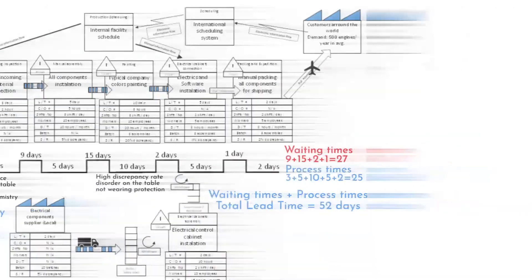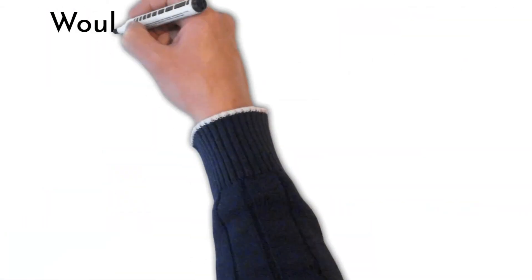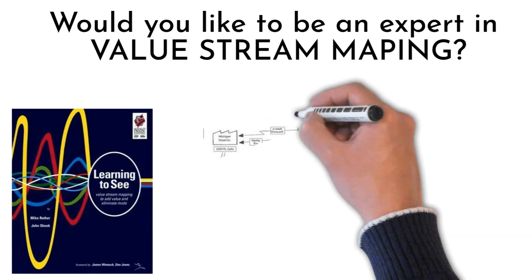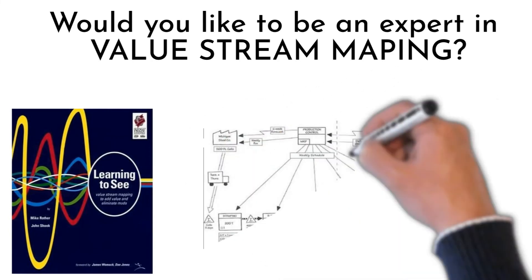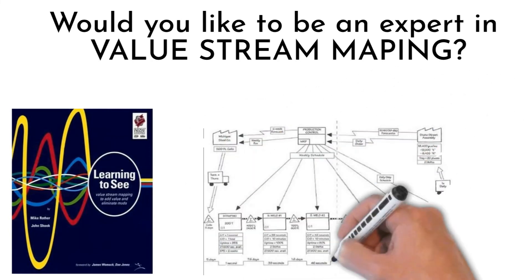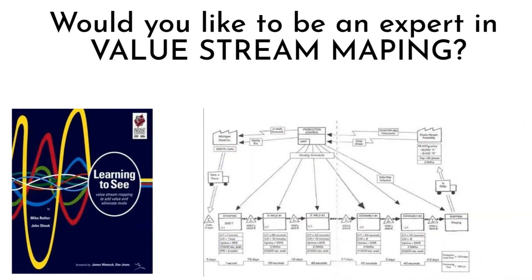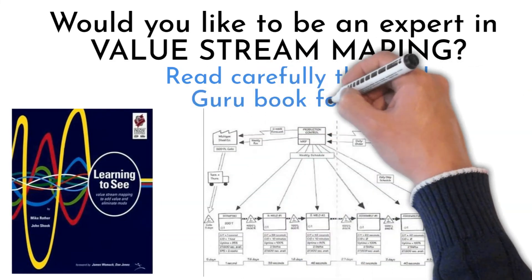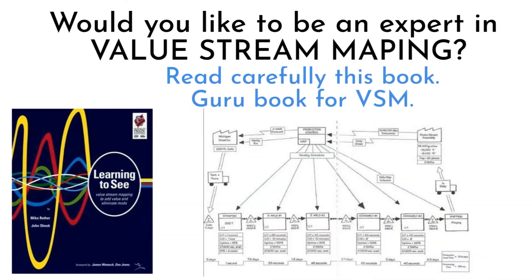If your intention is to become an expert on value stream mapping, read the book Learning to See by Mike Rother and John Shook first. It is a great source of detailed information about mapping and building future state. Find the link below to order the book.